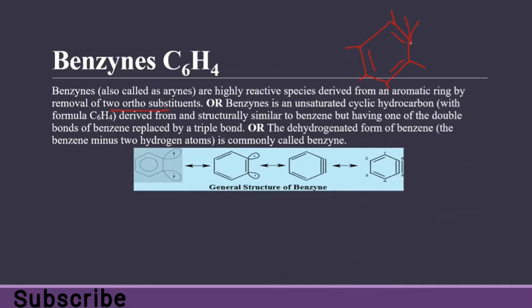When two ortho substituents are removed from benzene, two electrons become available — one from each carbon — and these form the general structure of benzyne. The molecule can also form a triple bond. The beauty of this molecule is that it is still aromatic because we only remove two ortho substituents and do not interfere with the internal aromatic electrons which take part in resonance.